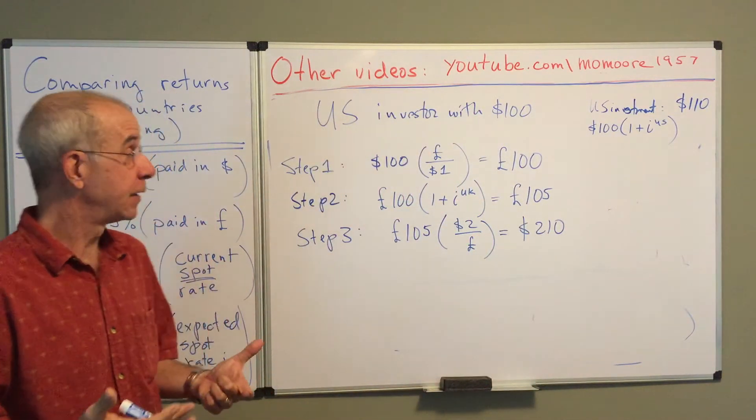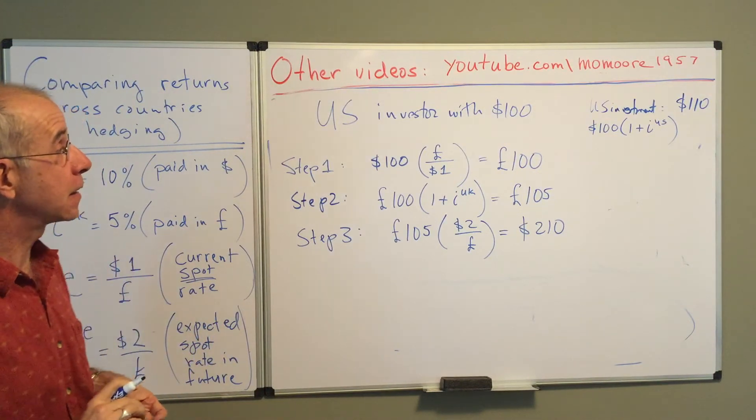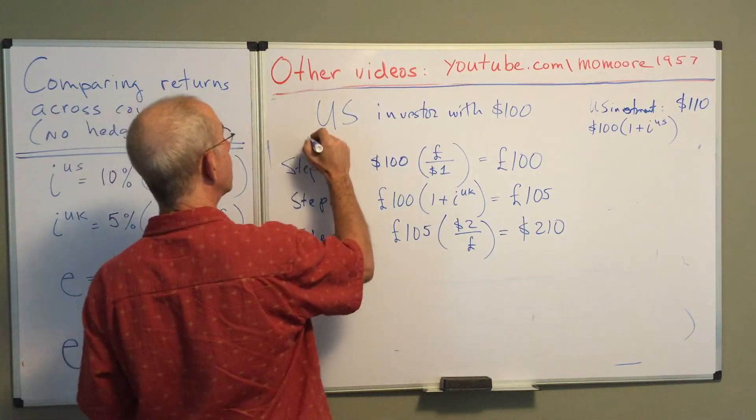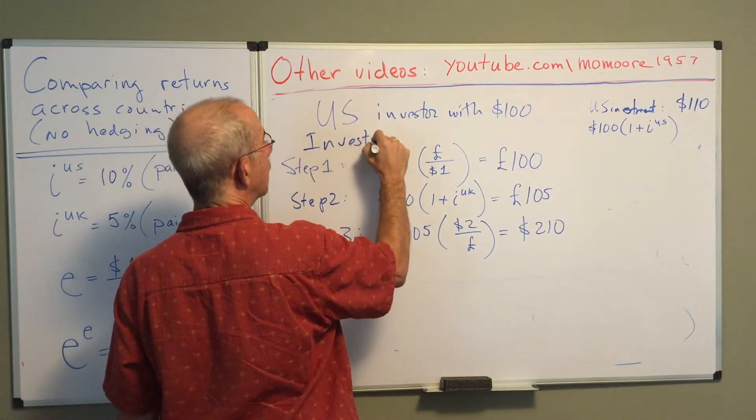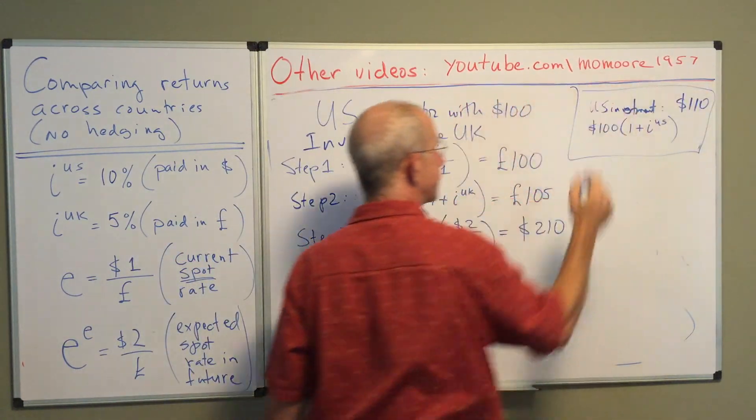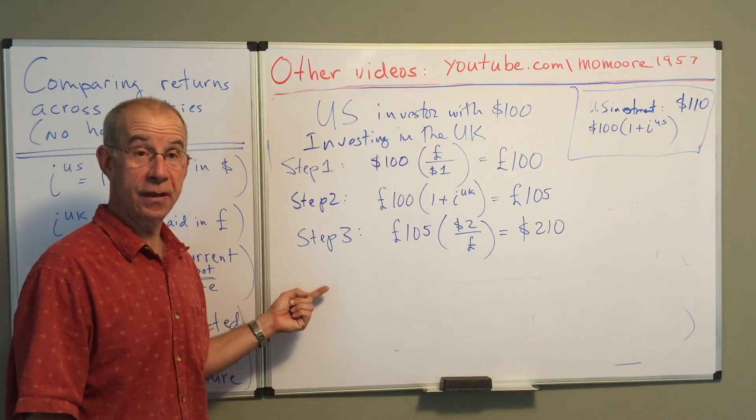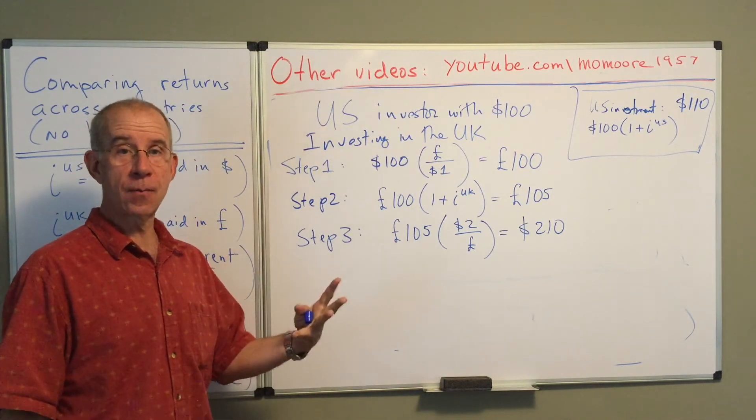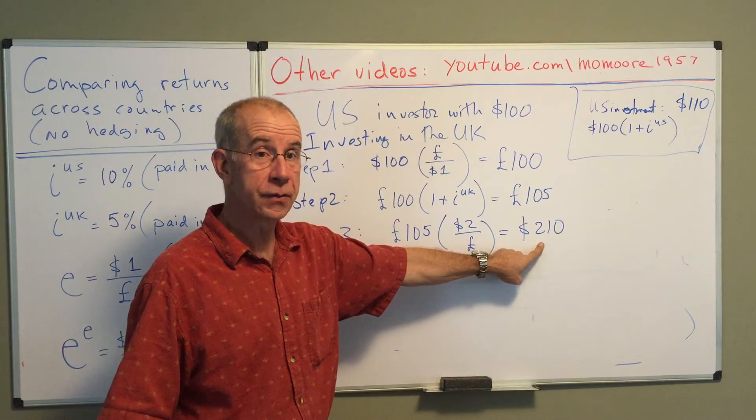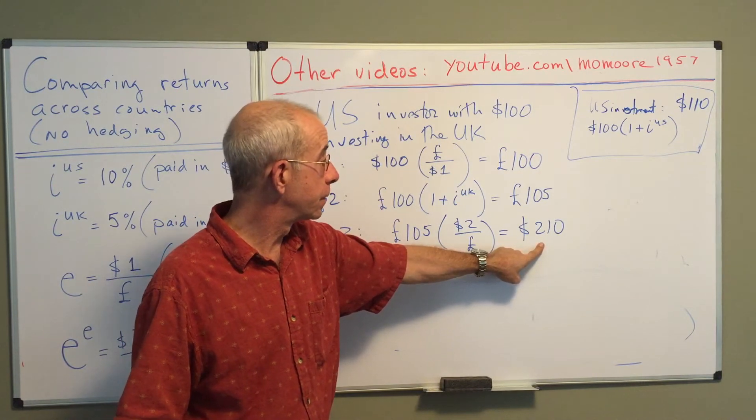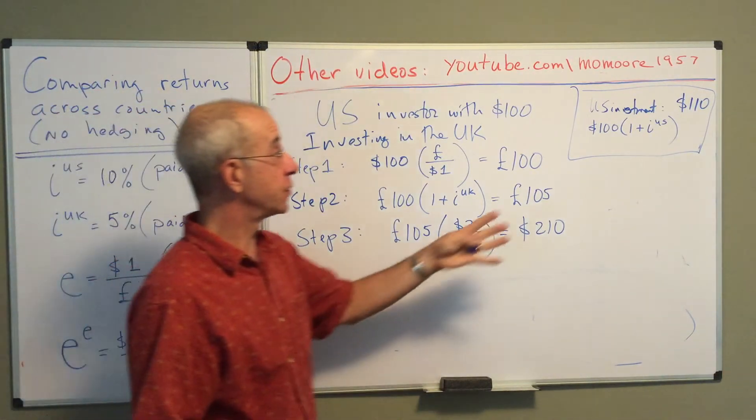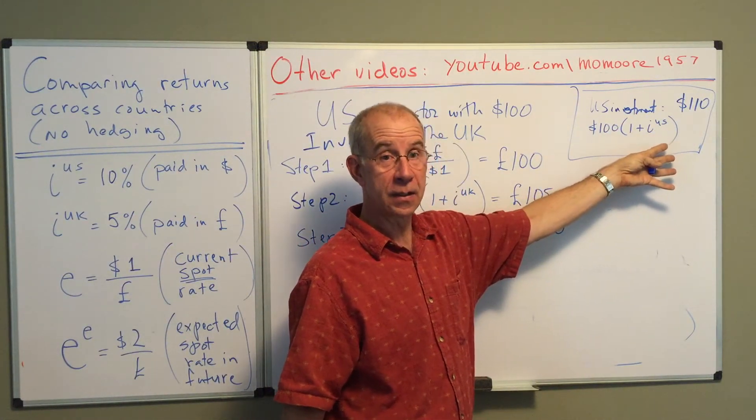At the end, they expect to have two hundred and ten dollars at the end of the year. So if you look at these two alternatives, investing in the U.K. or investing in the United States, the British investment for the American is far more attractive. They can turn their hundred dollars into two hundred and ten dollars in the U.K. using the British bond, as opposed to a hundred and ten if they invest in the U.S.